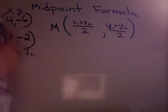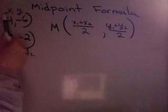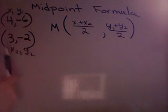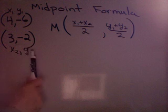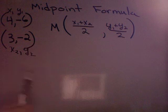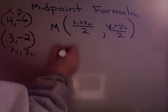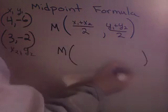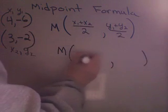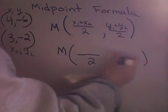Notice that in the first ordered pair, both the x and the y value have sub 1s, and in the second one, they have sub 2s. If I happen to have a third one, I might put sub 3s for that. Okay, so let's try and use the midpoint formula. So, the midpoint is some ordered pair.